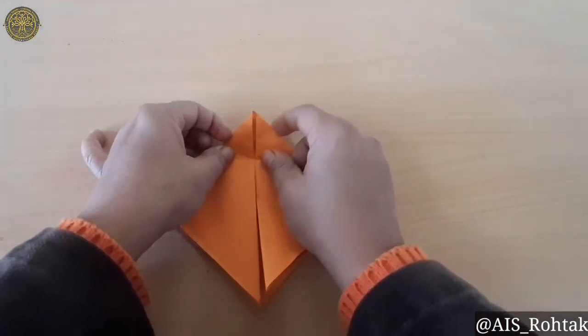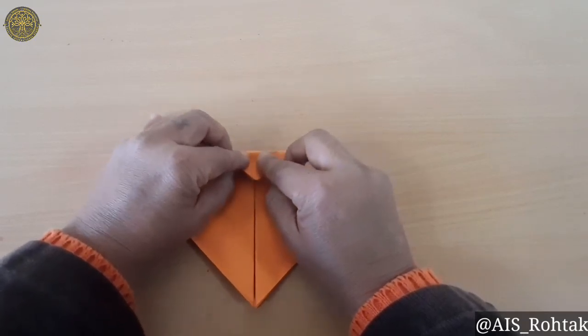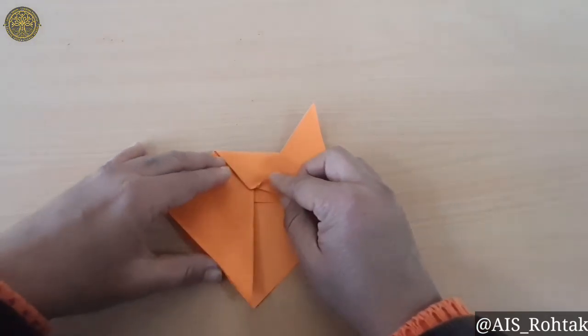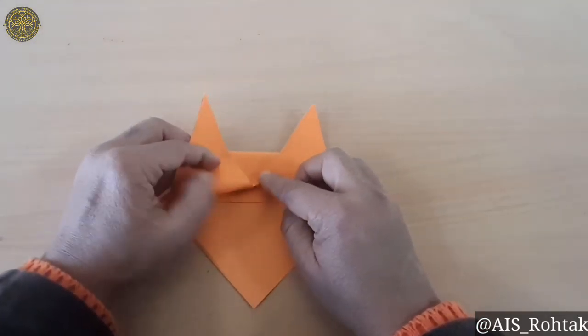Now fold the top side to the downward. Now open these two to the upward side to make the ear of the cat.